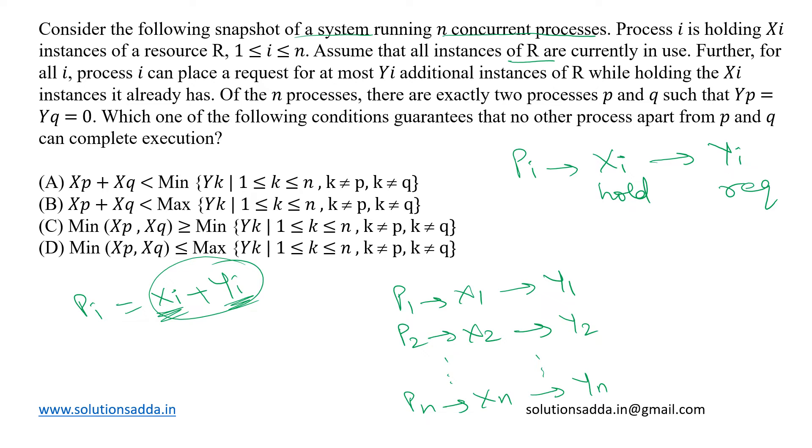Now, they have said that there are exactly two processes P and Q such that YP equal to YQ equal to 0, which means there are two such processes which do not have any additional resource requirement. They can execute in whatever they have already held which is XP and XQ and after that they will release these many number of resources XP plus XQ into the stream and then these can be used by the other processes.